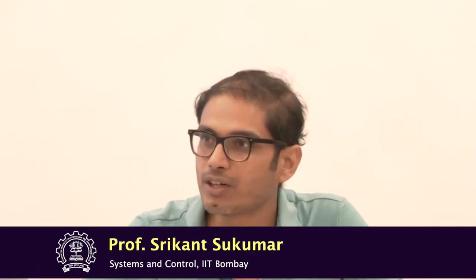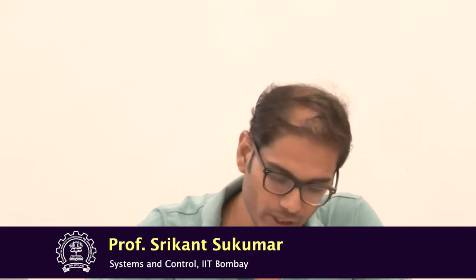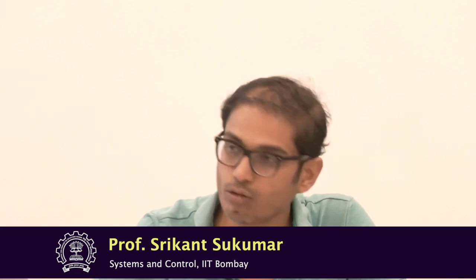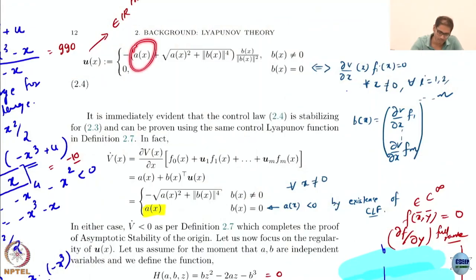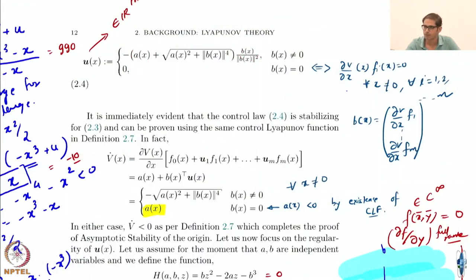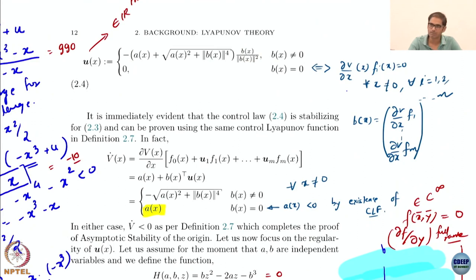What do we do? We want to apply the implicit function theorem. We are only looking at the scalar case here. We assume that A and B are scalars for this proof. You can also do the vector proof, but I am just keeping the discussion simpler by assuming scalar A and scalar B.